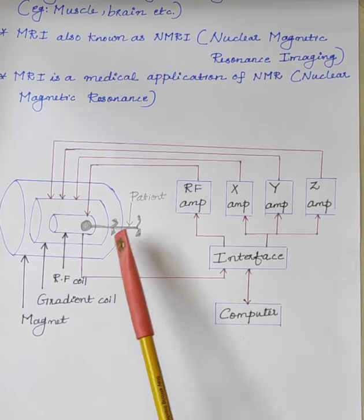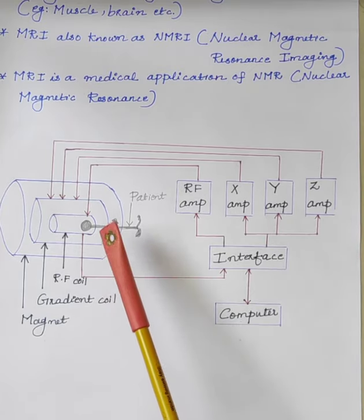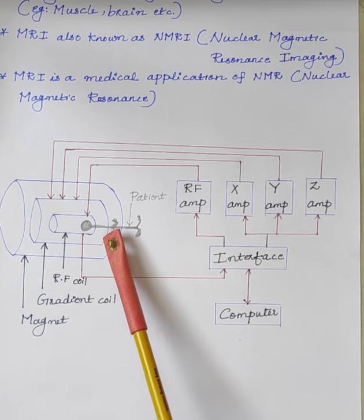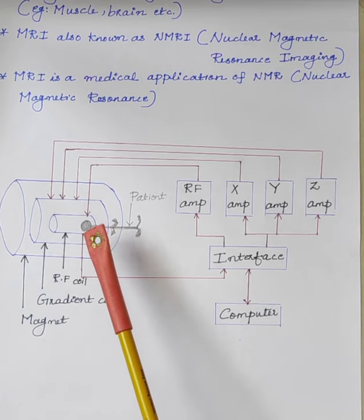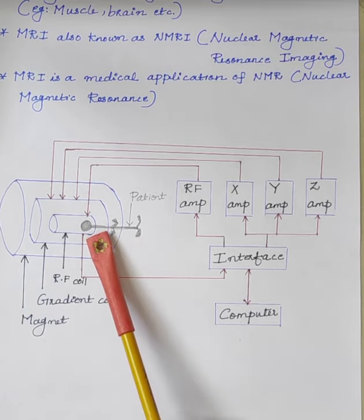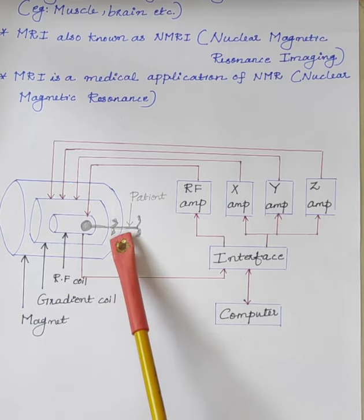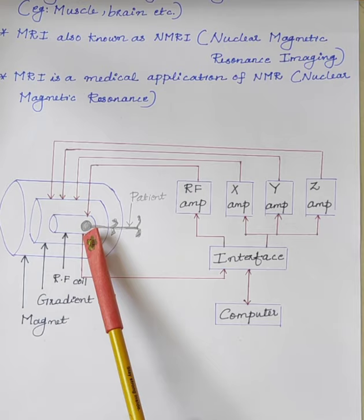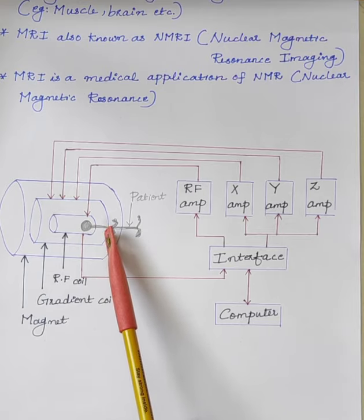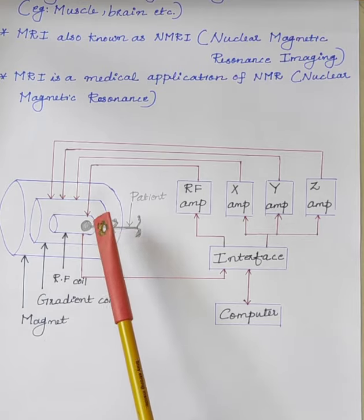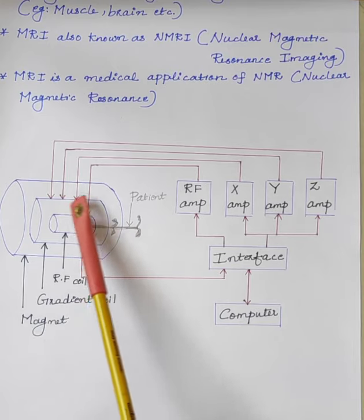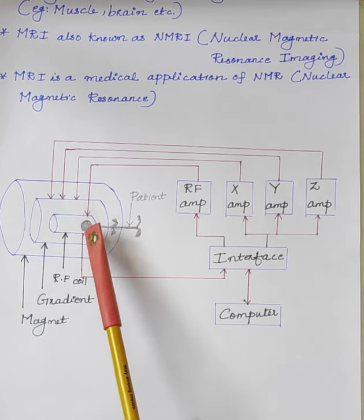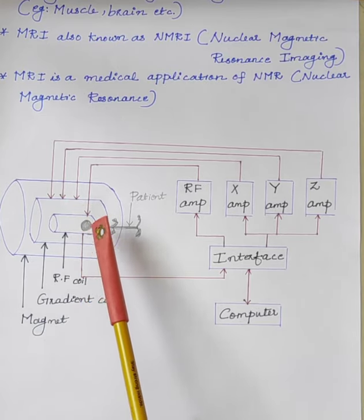For this reason, MRI scans map the location of water and fat in the human body. When an external magnetic field is applied, hydrogen atoms generate polarization that is detected by antennas. Here, radiofrequency coils are used to detect these signals.